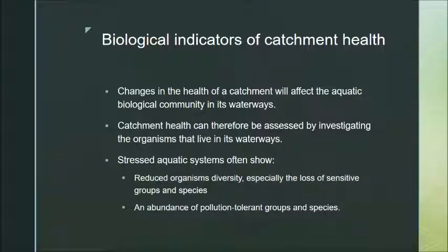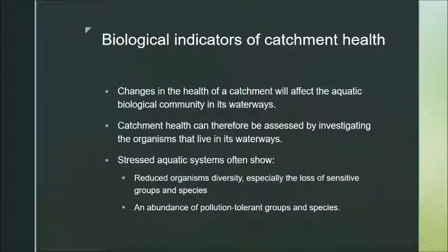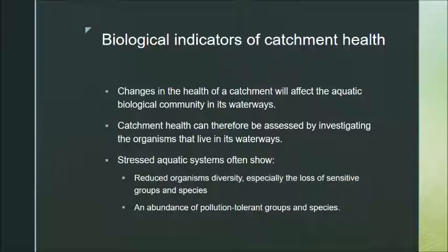A stressed, polluted, or disturbed system will show a reduced organism diversity, especially the loss of sensitive species. Reduced diversity and loss of sensitive species indicate a stressed aquatic system. There will also be an abundance of pollution-tolerant groups and species. For example, if we only see ibis and every other bird has disappeared, we can get a clear understanding of that system's health — the abundance of tolerant species tells its own story.